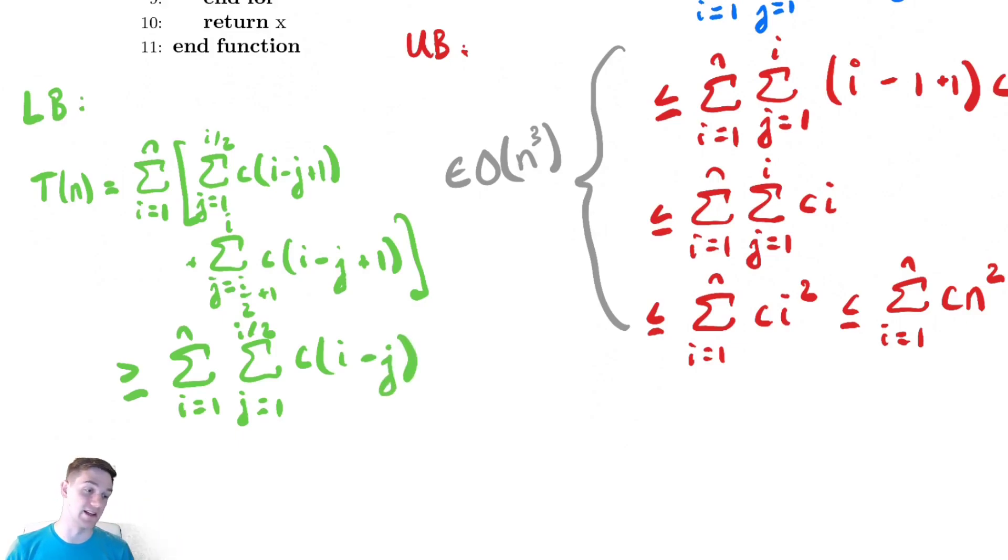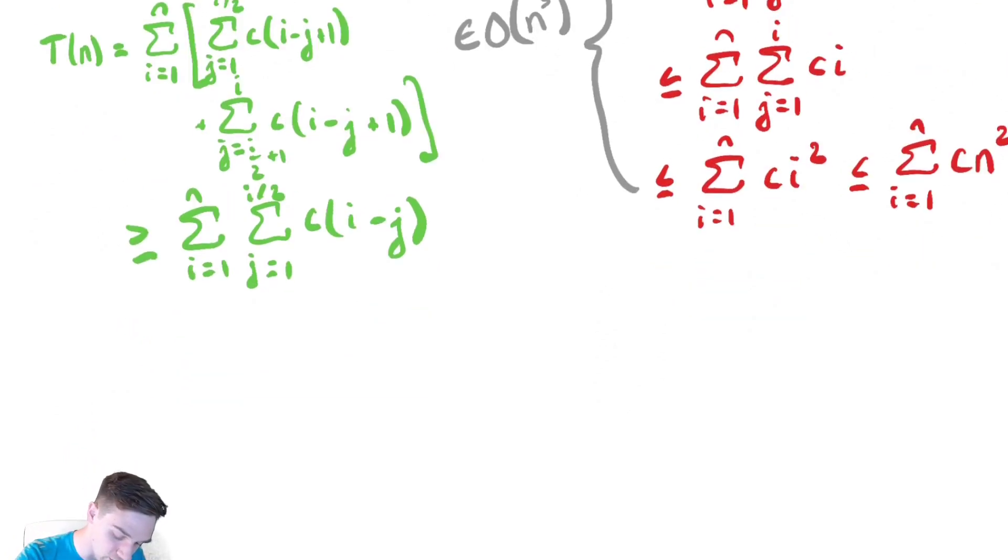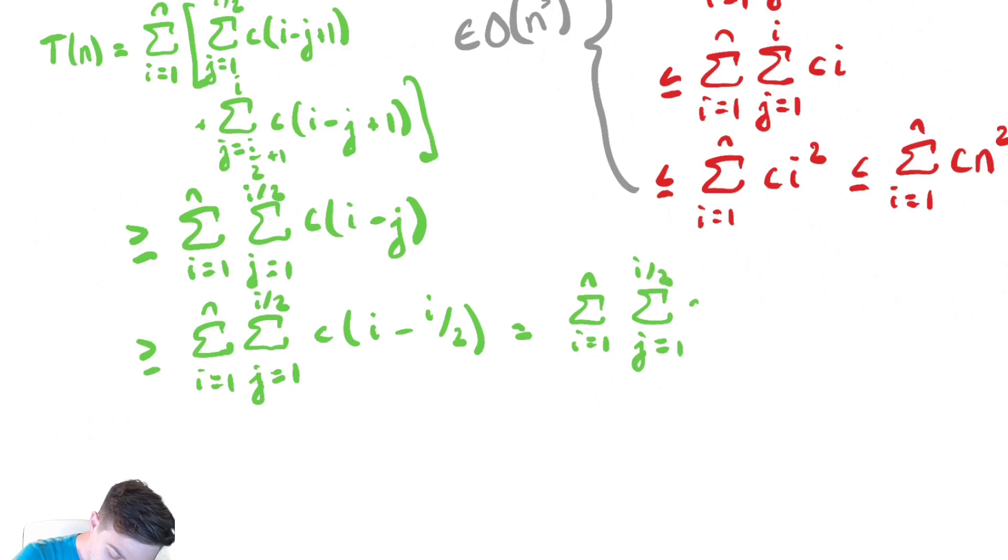That makes every term smaller by 1, and that definitely makes the overall summation smaller. I'm now going to plug in the value of j that makes that the smallest. So that value of j would be the largest value of j, which is i over 2. Sum from i equals 1 to n, sum from j equals 1 to i over 2, and we are plugging in j equals i over 2. Let's do a bit of simplification really quick. That's equal to the sum from i equals 1 to n of the sum from j equals 1 to i over 2 of c i over 2. So just like we saw with the upper bound, that innermost summation no longer has any j's inside of it, so now we have an easy simplification for our next step.